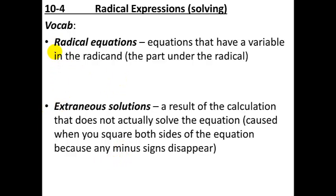First, a definition of a vocabulary term: radical equation. A radical equation is any equation — meaning you've got an equal sign with something on the left and something on the right — that also has a variable under the radicand. So, if you just have a square root of a number, it's not called a radical equation because that's just a number. But if you have the square root of a variable, then you have a radical equation.